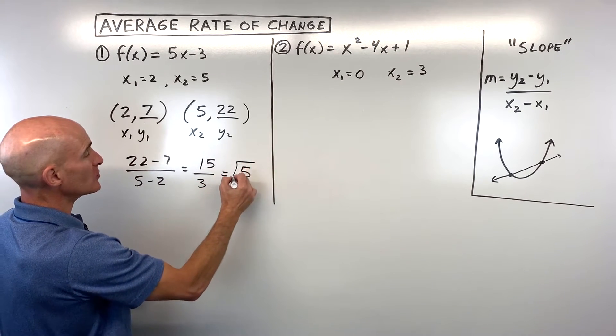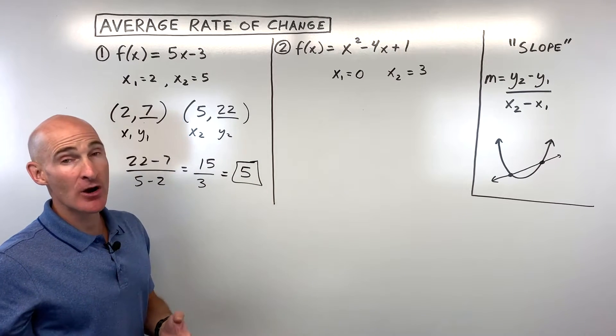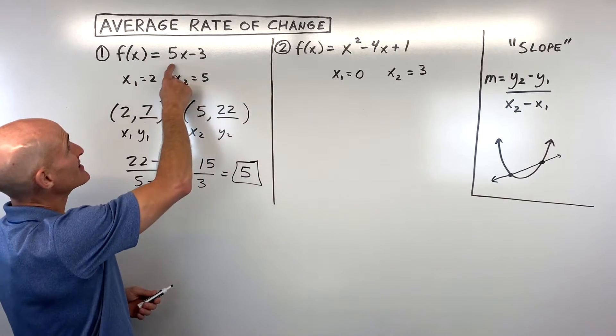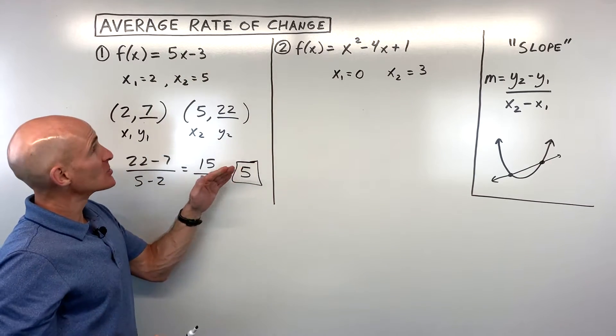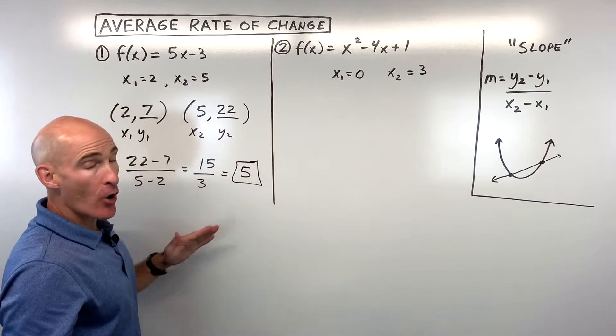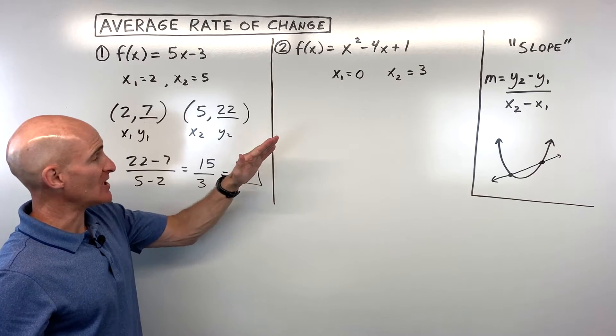Now you might be saying, Mario, that's no surprise to me because I can see that this is the equation of a line with a slope of 5. So in this particular problem, it always has that same rate of change of 5.